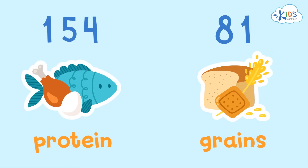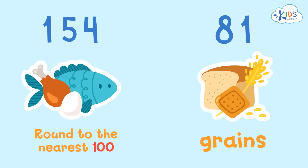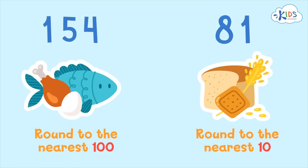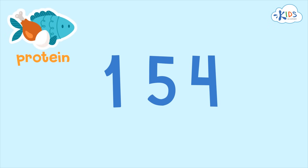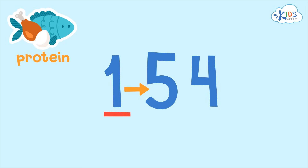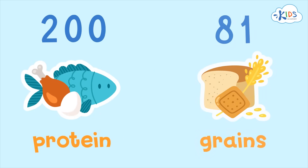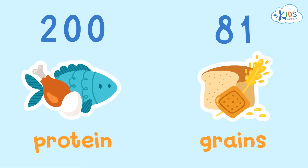Okay, here's the answer. We had to round the amount of protein one kid eats a day to the nearest hundred, and round the amount of grains one kid eats a day to the nearest ten. The amount of protein one kid eats a day is 154 grams. I see a five in the tens place — I know if it's five or higher we have to round up. The one in the hundreds place is underlined, so we have to round up the 100 to 200. So each kid eats about 200 grams of protein a day.